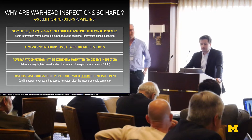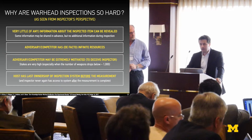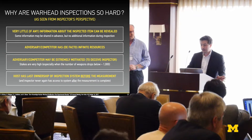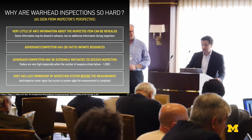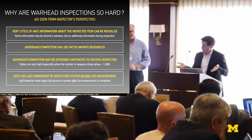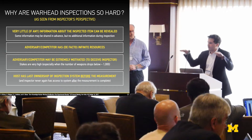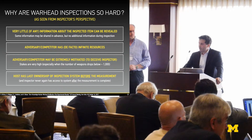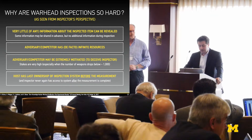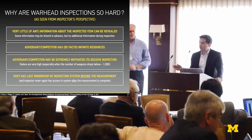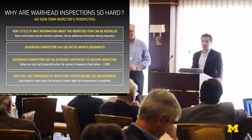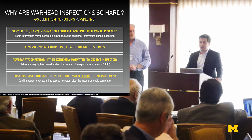Why is this hard? Warhead inspections are hard. From the inspector's perspective, very little information about the inspected item can be revealed—you don't know what you're going to inspect. Adversaries have almost de facto infinite resources and might try to deceive you, especially as the stakes become higher and the number of weapons eventually shrinks. You might put a lot of resources into deceiving the inspection system. And amazingly, the host usually has last ownership of the inspection system—not only before the inspection, but also after. That means you can never, as an inspector, replay what happened during the inspection.